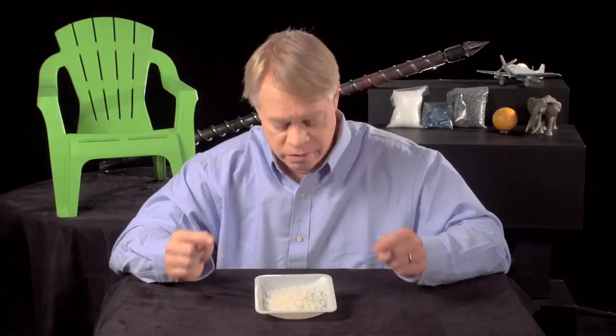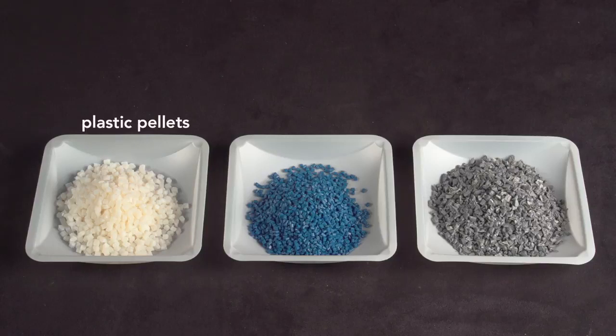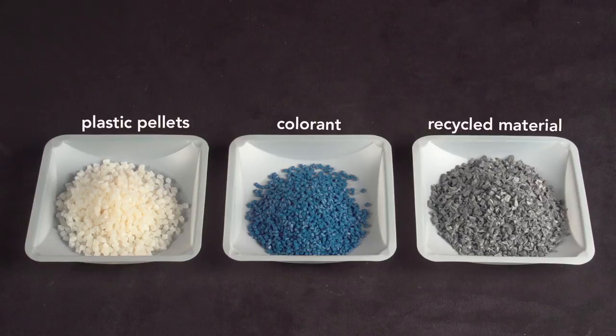All injection molded objects start with these plastic pellets, which are a few millimeters in diameter. They can be mixed with small amounts of pigment, called colorant, or with up to 15% recycled material then fed into the injection molding machine.